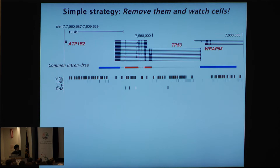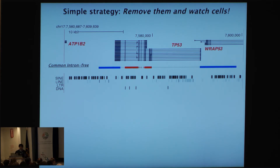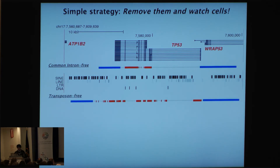The approach I'm taking right now is very simple. Basically, we are making a mutant fragment which doesn't have introns, and then we replace that fragment into the wild type in a living chromosome. In this case, we are removing introns which exist commonly in all spliced isoforms. Another mutant we are making is a transposon-free fragment. That way, in the beginning, we can test whether these removals impact the expression of the target genes.